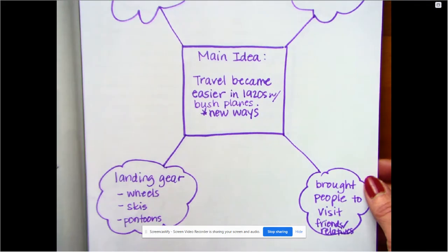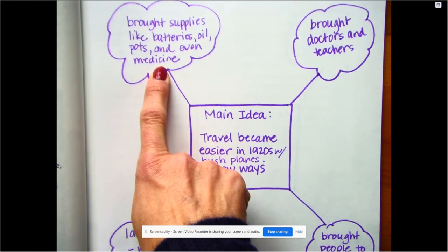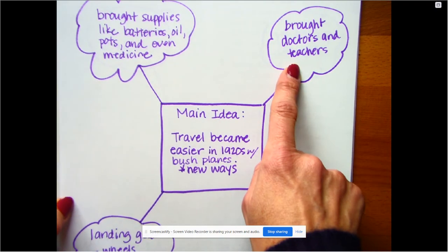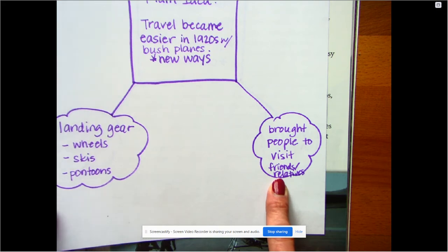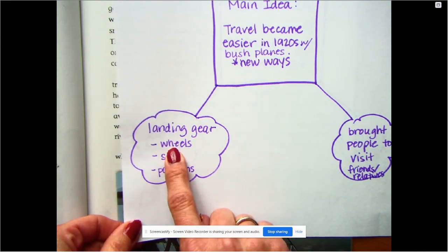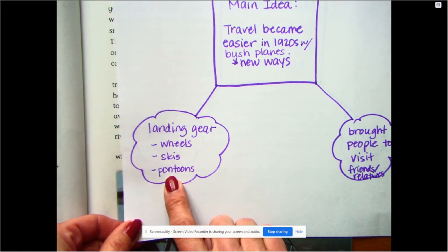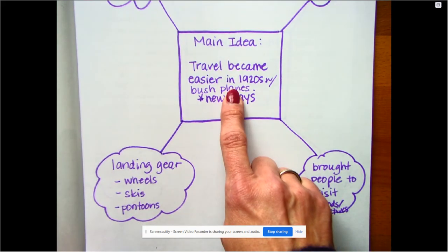Why did that make travel easier? What happened? Look at the different things. Those bush planes brought supplies like batteries for flashlights, oil, pots and pans. They even brought medicine for people. They also brought doctors and teachers to do jobs there. They brought regular people to visit their family, friends, and relatives. And it was easier using those bush planes because some of them had wheels so they could land in flat grass in the fields, some had skis on the bottom so they could land in the snow, and others had pontoons on the bottom, which means they could land in the water. So when they created the bush planes and started coming to Alaska in the 1920s, that made things a little bit easier for travel.